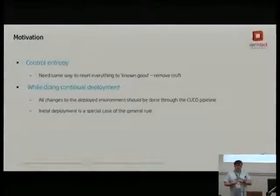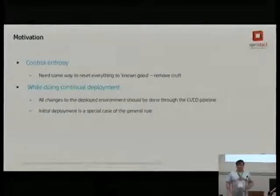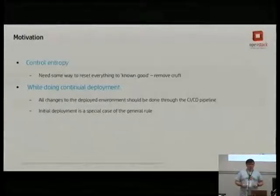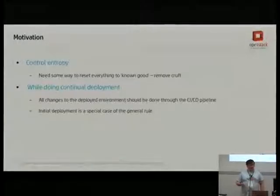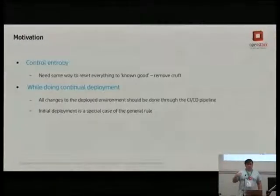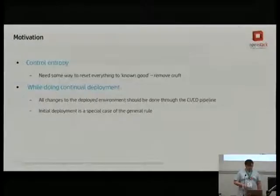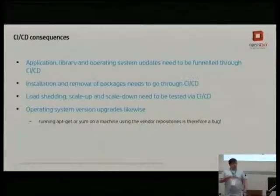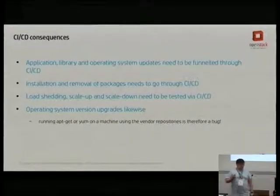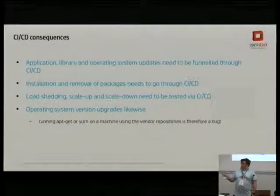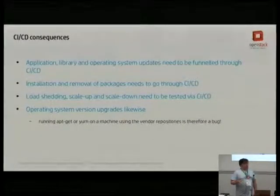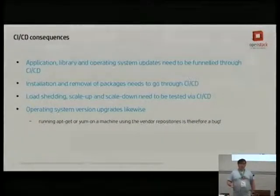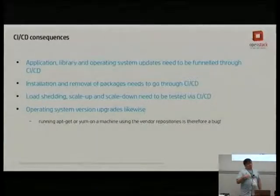Continual deployment means that every change to a production environment has gone through testing. Someone SSH-ing into the server and fiddling around to fix something isn't an acceptable answer — it doesn't scale. The initial deployment of a service onto a machine is a special case of the general principle that you automate the process by which you get software onto the machines. Everything — whether from your software tree or from application or OS vendors — needs to go through your CI/CD tool chain. That innocuous kernel update might actually break your server.